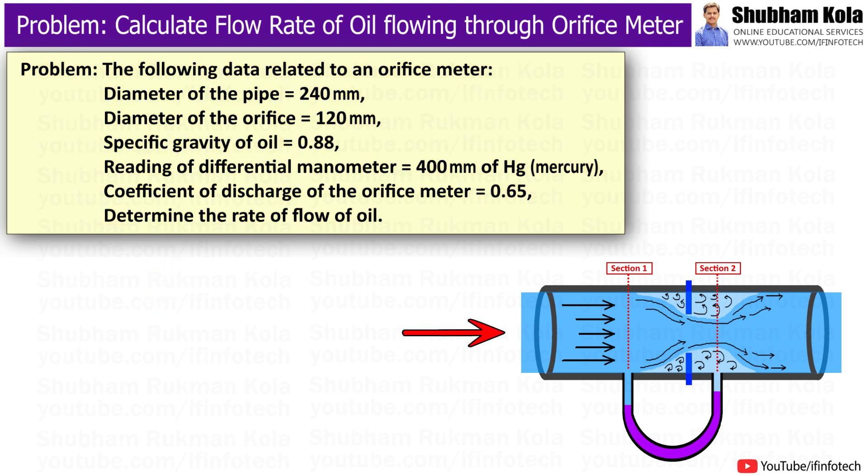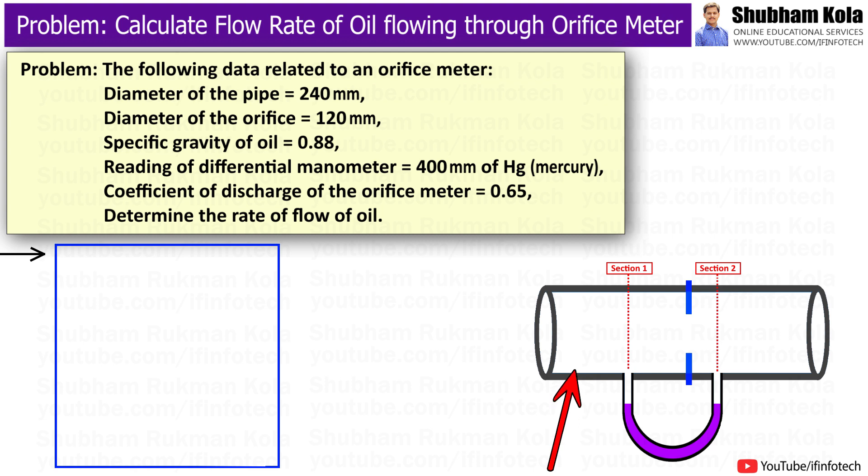To solve this problem, first I will draw the diagram of the orifice meter and note down the given data provided in the problem. So let us consider this is the pipe whose diameter value is given in the problem as 240 mm, i.e. 0.24 m, which is denoted as d1.